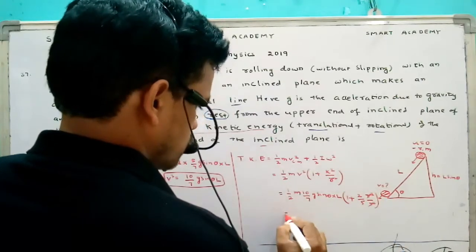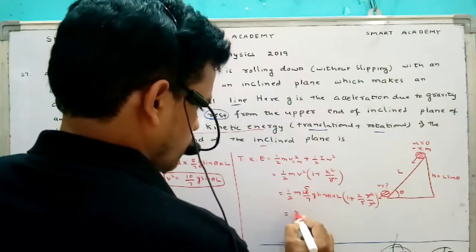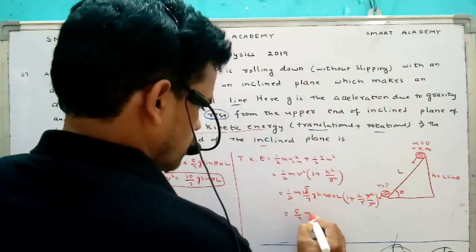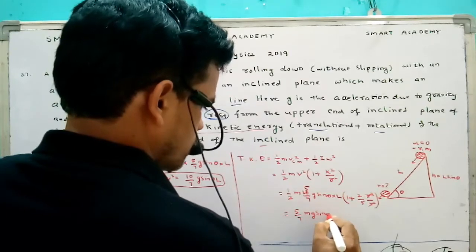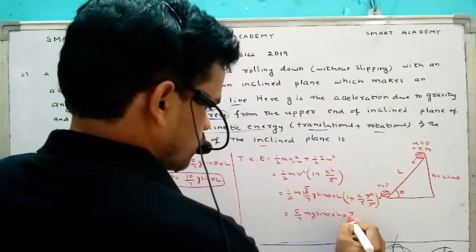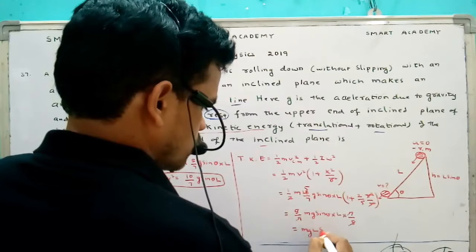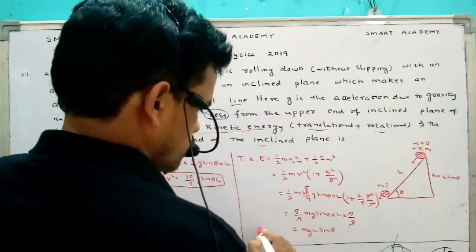You can cancel it. So 2 by 5, 5 by 7 m g sine theta L into 5 plus 2, 7 by 5. So finally we got this much.